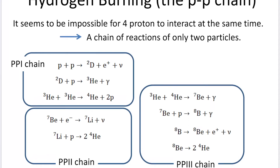In this session, I'd like to explain the nuclear reactions happening in the stars. The first one is hydrogen burning, what we call the PP chains. It is almost impossible for four protons to interact at the same time, so we consider the chain of reactions involving only two particles.